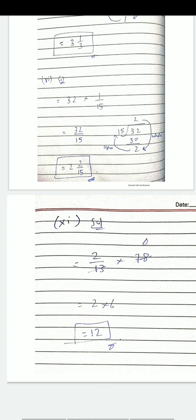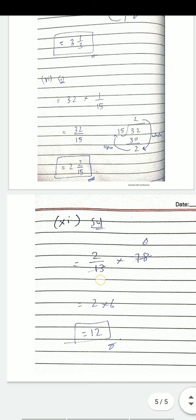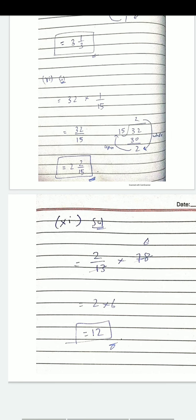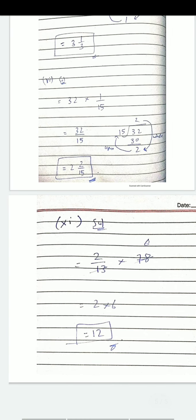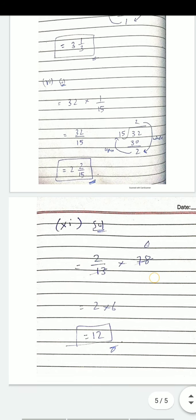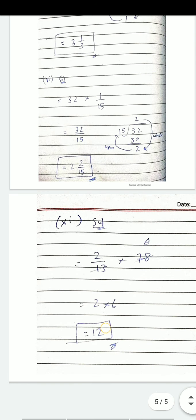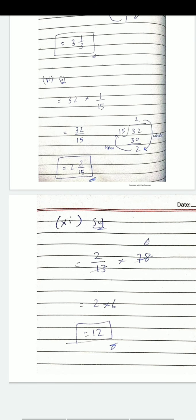اگلا سوال: 13 کا table یاد ہو تو آسان ہے، calculator میں بھی دیکھ سکتے ہو۔ 13×6=78، تو یہ cancel ہو جائے گا۔ 78 نیچے پوری cancel ہو گئی، اوپر 2×6=12 بچا۔ اس میں improper fraction کا چکر نہیں آیا کیونکہ نیچے والی چیز پوری cancel ہو گئی — صرف 12 answer آیا۔